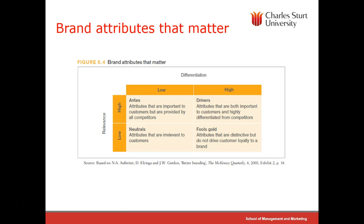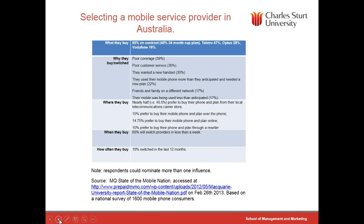Research published in McKinsey Quarterly highlights the idea of looking for differentiation that is high and has high relevance, although you might have lower differentiation that can be provided easily by competitors — this is often a challenge in the tertiary education sector. Here's an example from research into selecting a mobile service provider in Australia. Some attributes vary across age groups: having a handset and coverage is much more important for younger consumers, while service becomes more important as you get older. Notably, almost a majority of these decisions are not made online — people actually go to a physical store.